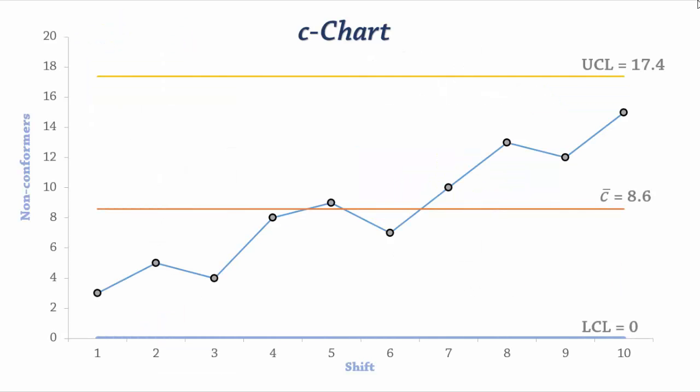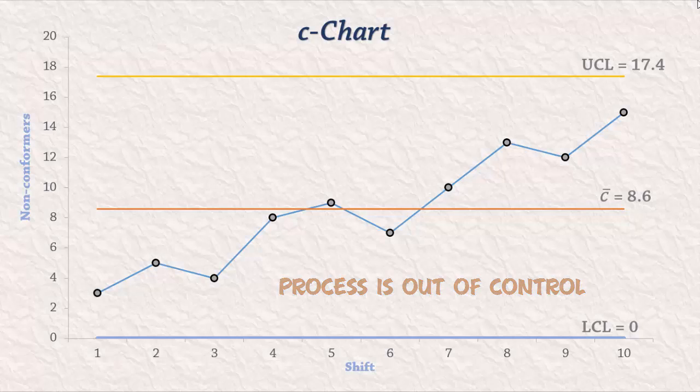Now let's take a look at the C-chart. We can see here that we have a positive trend. That is, the number of non-conformers is increasing on average over time. This suggests that the process performance is degrading over time. Therefore, the process is out of control and some corrective measures need to be taken. And that's C-chart.